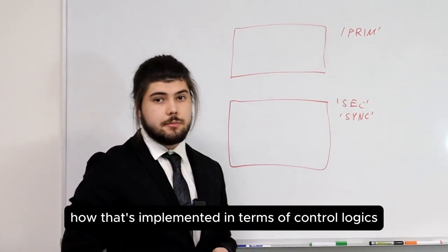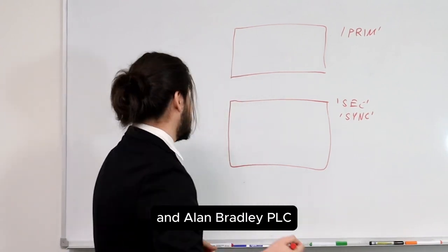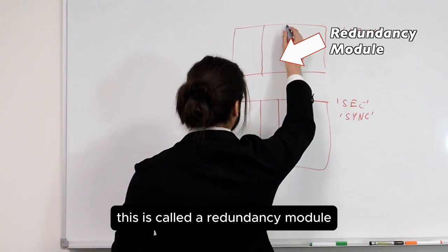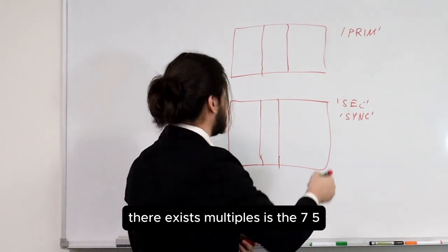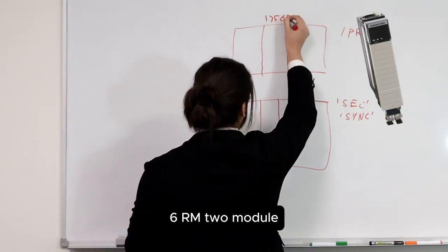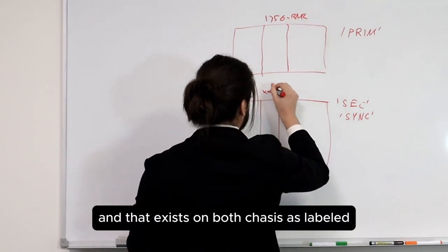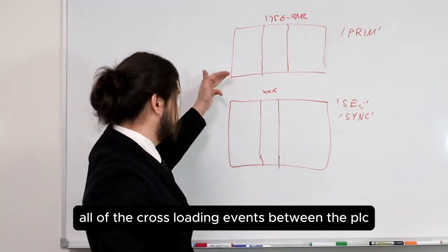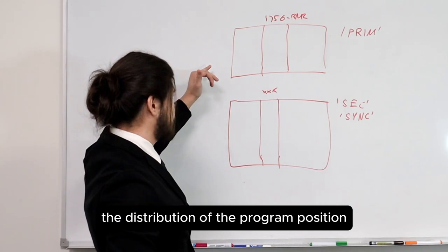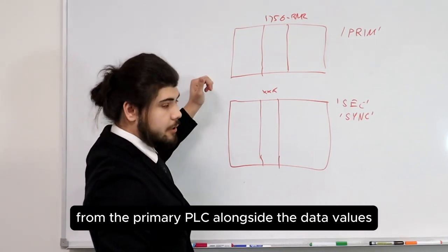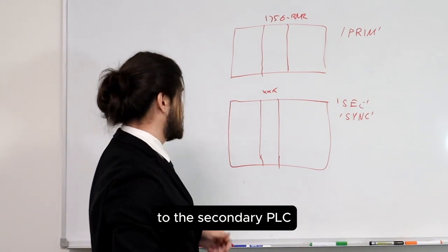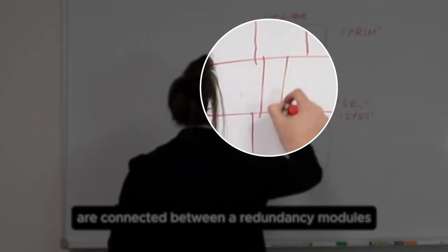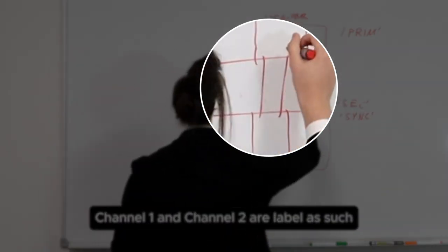How that's implemented in ControlLogix Allen Bradley PLCs is we have a specific module installed in both PLC racks called a redundancy module. The one we've been working on specifically is the 756-RM2 module, and that exists on both chassis. This module controls all of the cross-loading events between the PLCs — an event which controls the distribution of the program position from the primary PLC alongside the data values at any given stage to the secondary PLC. For Allen Bradley PLCs, this is implemented through two fiber optic channels connected between the redundancy modules, labeled channel 1 and channel 2.